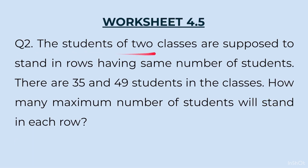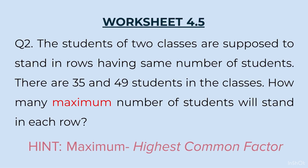Question 2: The students of two classes are supposed to stand in rows having the same number of students. There are 35 and 49 students in each class. How many maximum number of students will stand in each row? The word 'maximum' indicates we have to find the Highest Common Factor, so again in this question we will find the HCF.